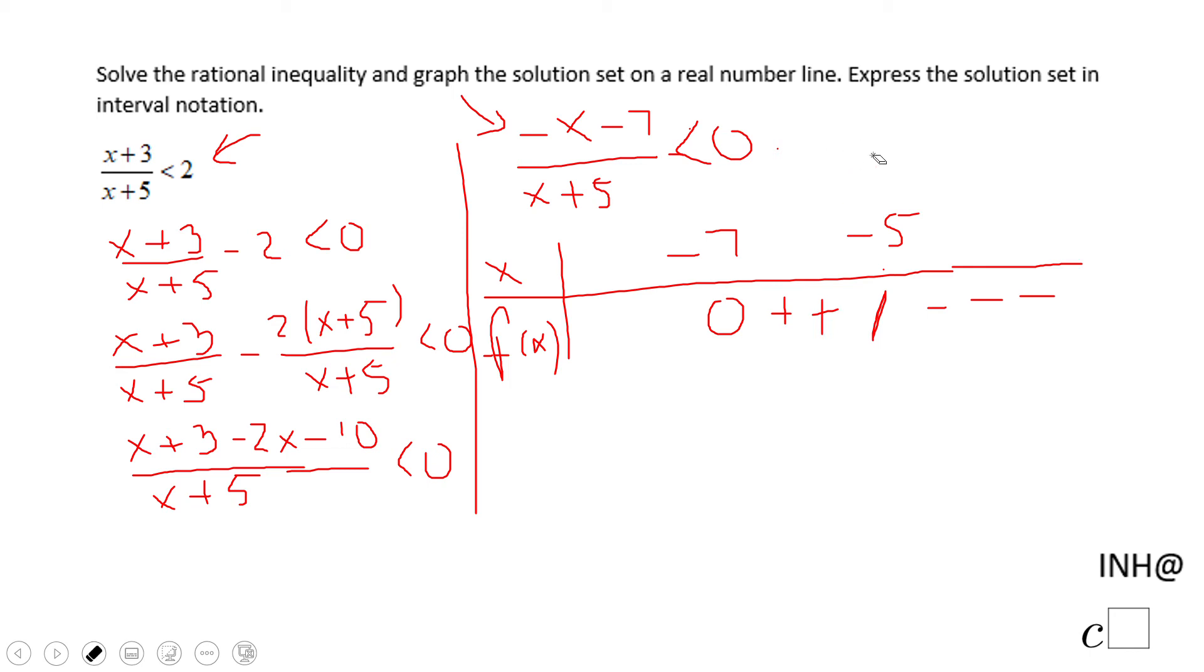Let's do one more time for a number that is less than negative seven, like negative eight. The numerator becomes a positive number and the denominator a negative number, so the general outcome for this third interval will be a negative number.